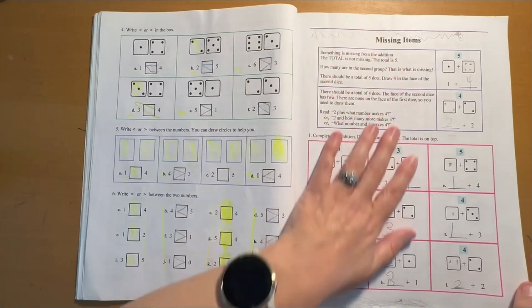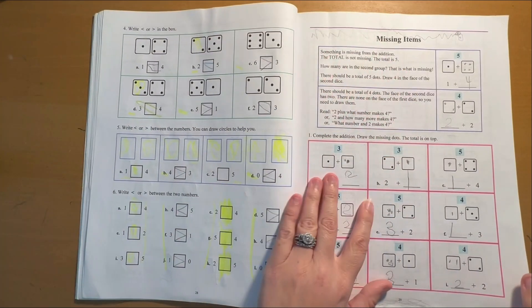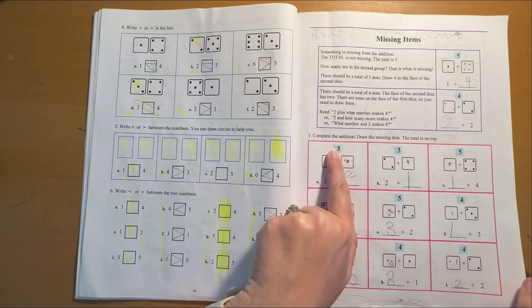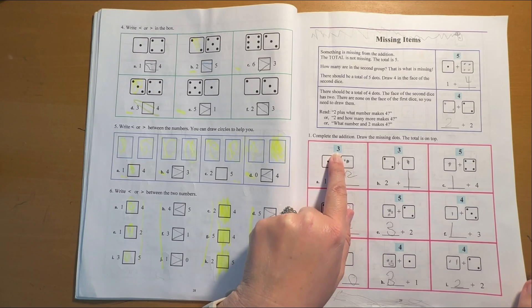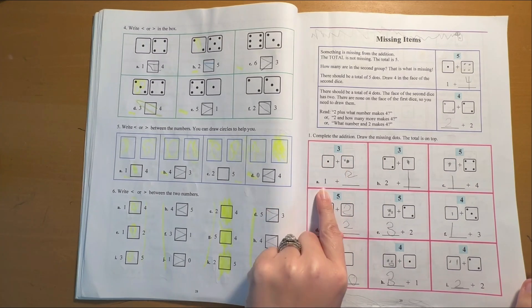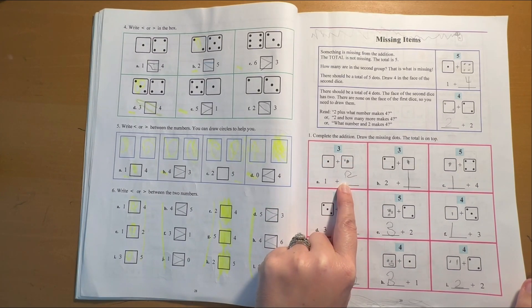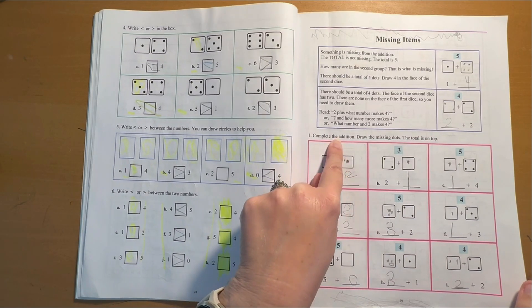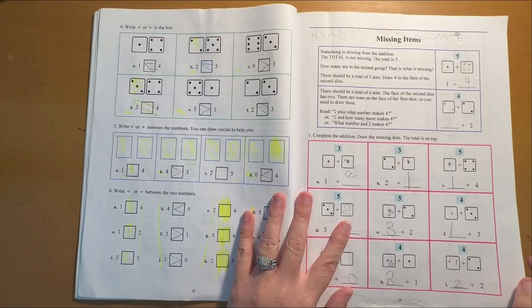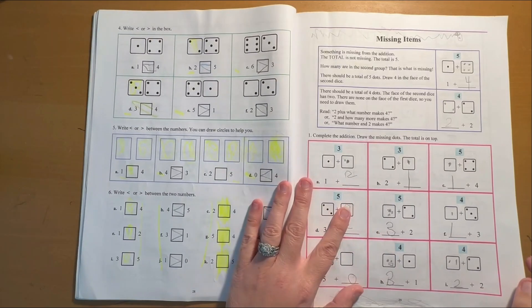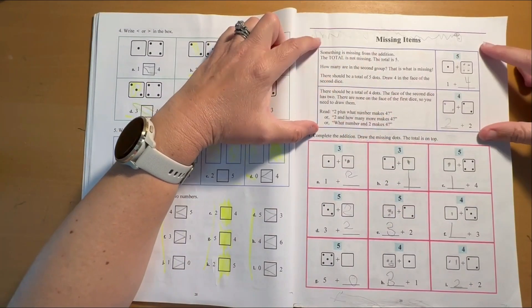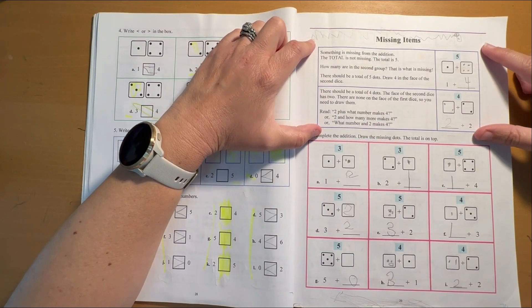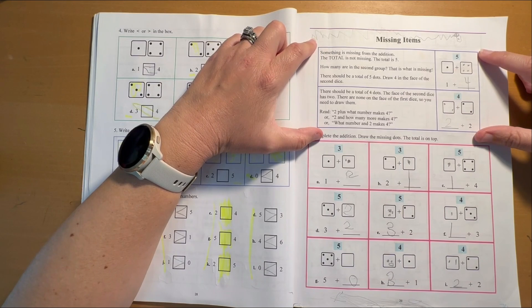Then you see how quickly we're getting into missing items or what is often called missing addends. So you're going to see that you need to make a total of three. You have one and you have to figure out how many you need in your other group or on your other dice to make three. So the lesson part of the Math Mammoth curriculum is this right here. It's usually in a blue box at the beginning.